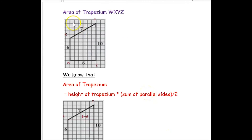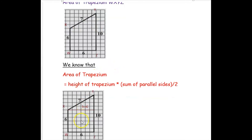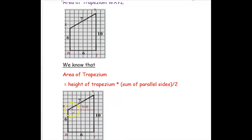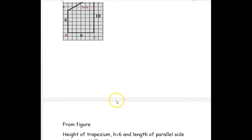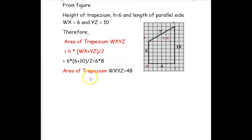Now we find the area of the same trapezium. To find the area, we first find the height from the parallel side to the parallel side. Counting the units from base to base gives 6 units, so the height is 6. The parallel sides are WX and YZ. Applying the formula: height is 6, into (6 plus 10) divided by 2, which is 6 into 8. So the area of trapezium WXYZ is 48.